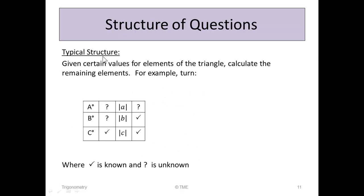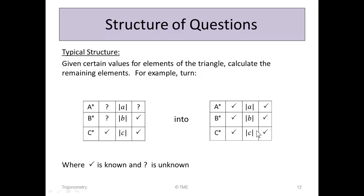The typical structure of a question requiring these rules is as follows: you'll be given certain values for elements of the triangle and asked to calculate the remaining ones. A triangle has three angles and three sides — six things to identify. You might start knowing only one angle C, one side C, and one side B, with the other three elements unknown. Your task is to turn all unknowns into knowns.